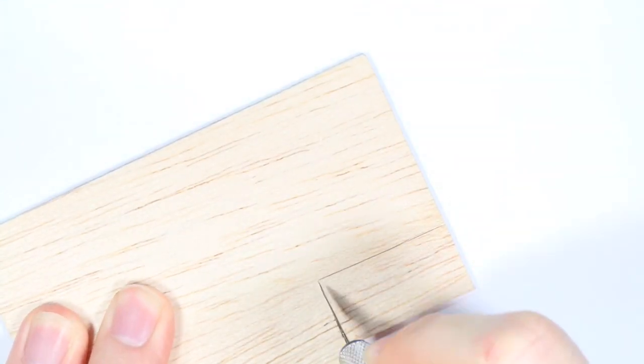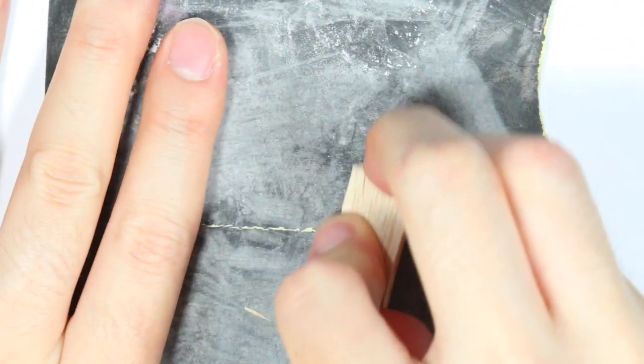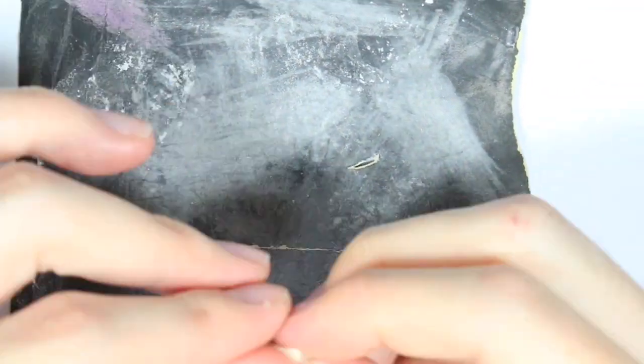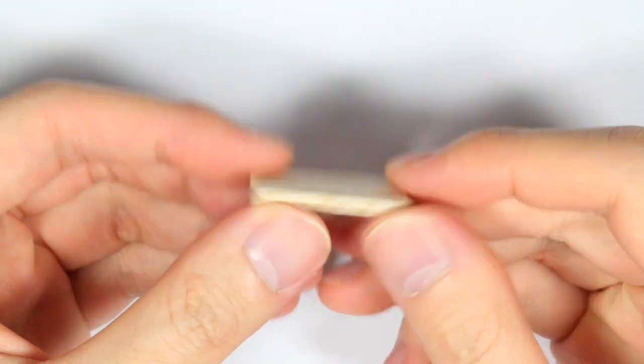So to make the wooden base, you want to take some balsa wood and cut a rectangle shape. I'm going to rub it on some very fine grit sandpaper, this is 600 grit, and smooth out the edges like this.